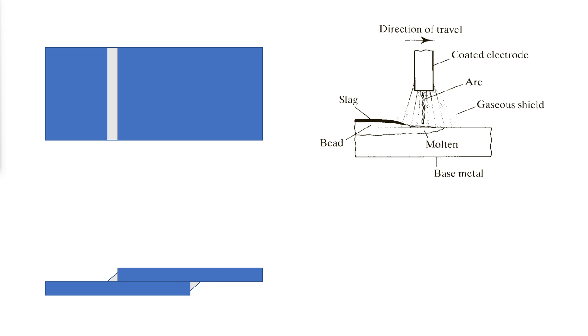In the shielded metal arc welding process, current arcs across a gap between the electrode and base metal, heating the connected parts and depositing part of the electrode into the molten base metal. A special coating on the electrode vaporizes and forms a protective gaseous shield, preventing the molten weld metal from oxidizing before it solidifies.